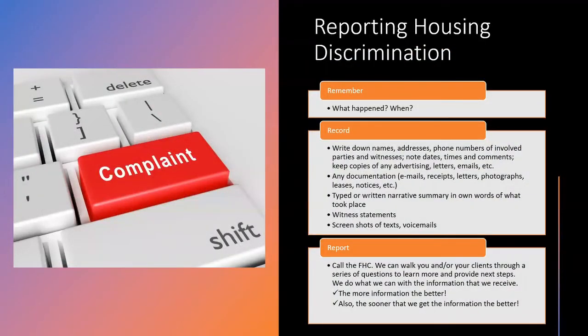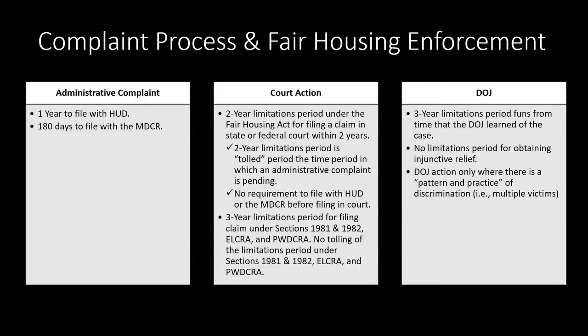We can talk and walk clients through questions to learn more, and the sooner we're informed, the better results we can get. In the complaint process, there are three main areas: administrative complaint, court action, and DOJ. Administrative complaint would be filing with HUD — there's a one-year limitations period — or 180 days to file with the Michigan Department of Civil Rights.